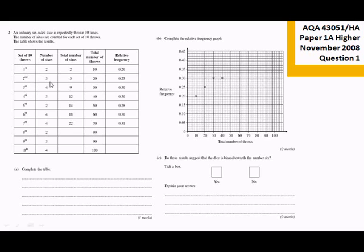In the second 10 throws, there were 3 sixes. So that makes 5 sixes so far in total. The 2 that we had before, plus the extra 3, makes 5. So 5 sixes out of 20 throws, 5 out of 20 is 0.25. Then another 4 sixes makes a total of 9 out of 30 throws. 9 out of 30 is 0.3. Then another 3 sixes, making 12 sixes so far out of 40. 12 out of 40 is 0.3. And so on and so on. So complete the table.